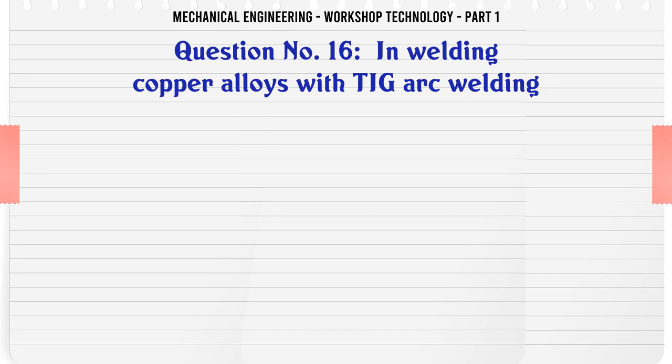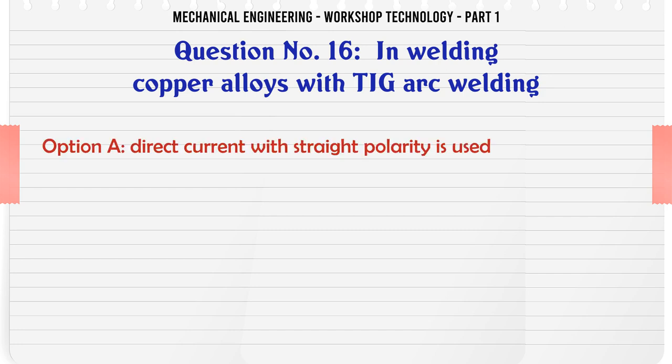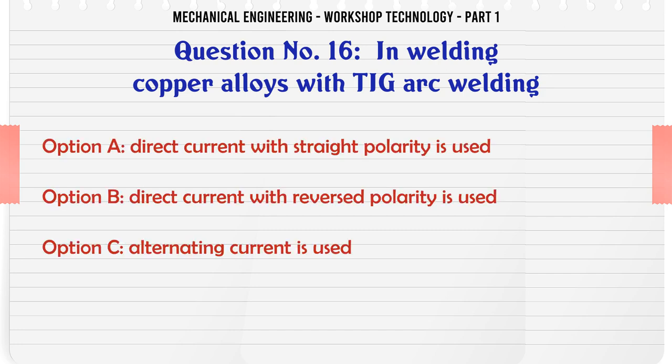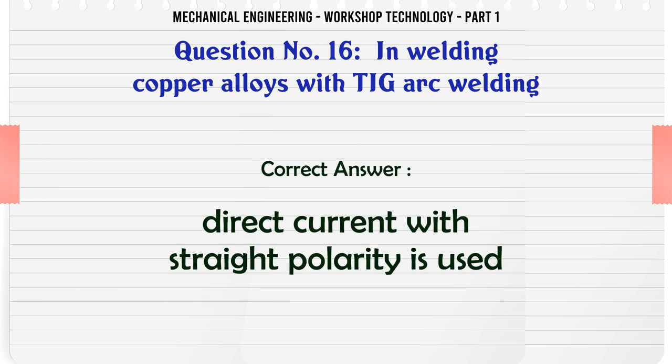In welding copper alloys with TIG arc welding: A. Direct current with straight polarity is used. B. Direct current with reversed polarity is used. C. Alternating current is used. D. Any one of these. The correct answer is: Direct current with straight polarity is used.